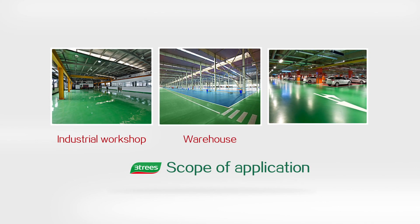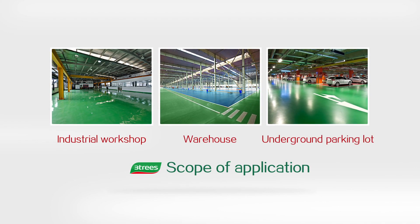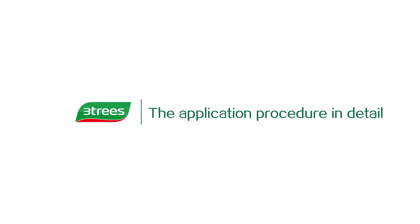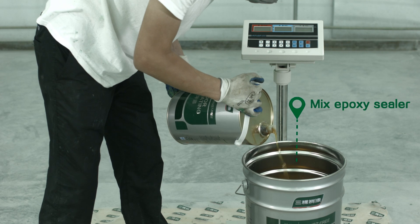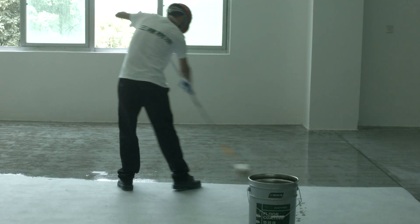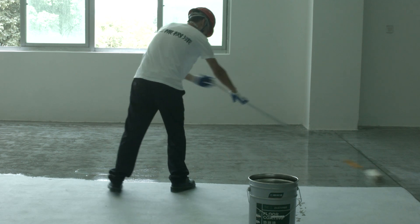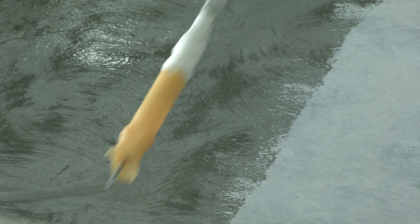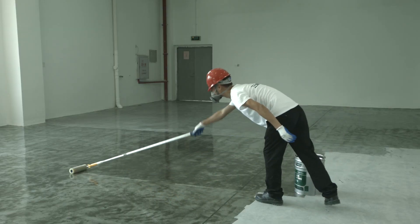Scope of application includes industrial workshop, warehouse, underground parking lot, etc. Following is the application procedure in detail. Step 1: Priming. Mix epoxy primer. Use epoxy primer to prime the substrate. Use a roller to apply to seal cement pores and enhance coating adhesion. Apply evenly and avoid omission.